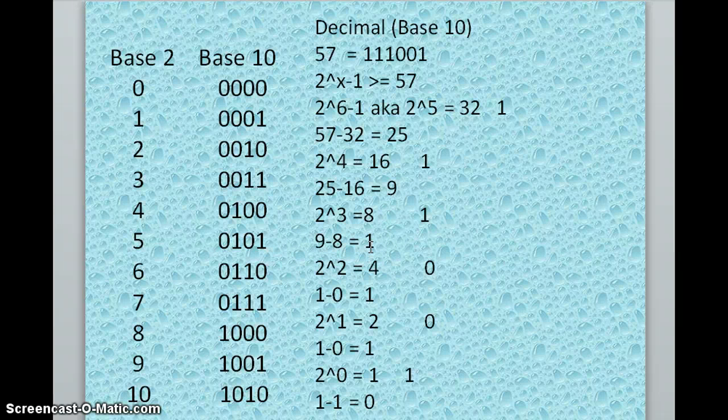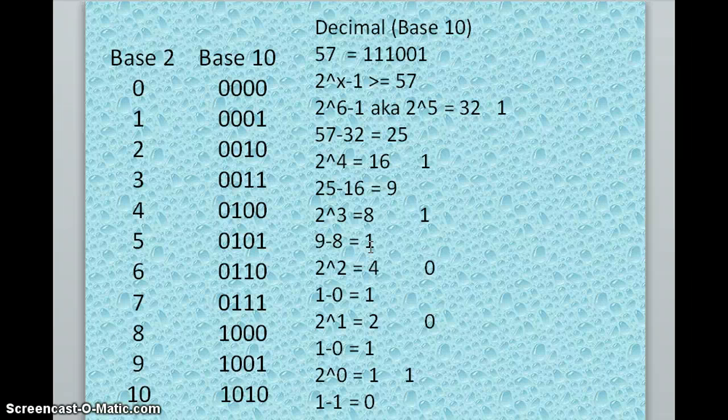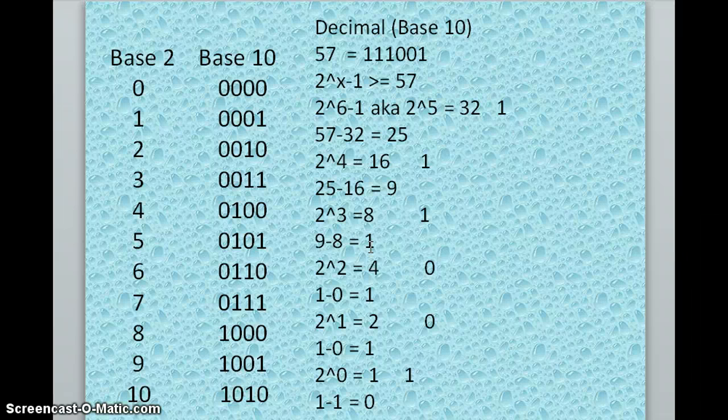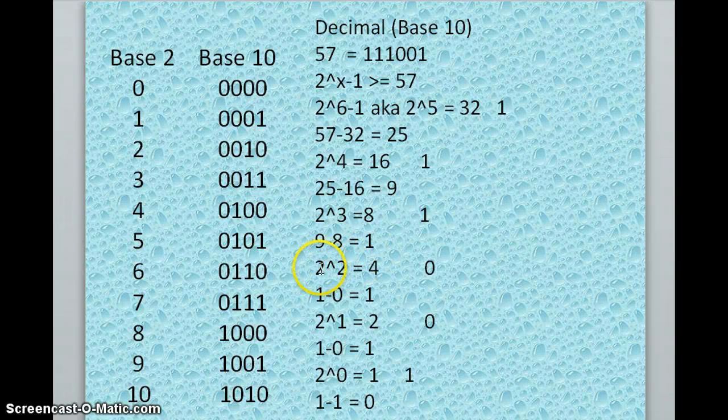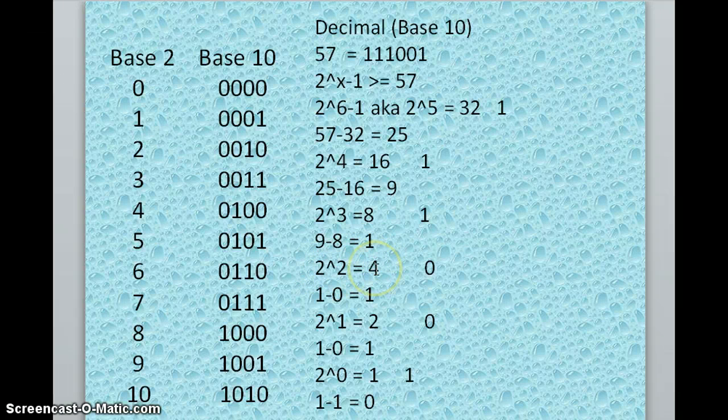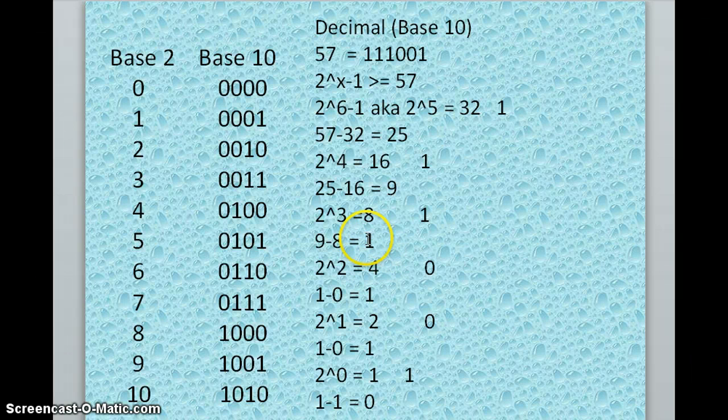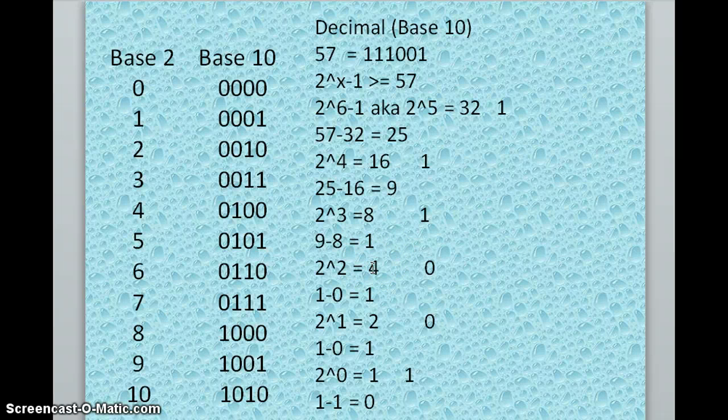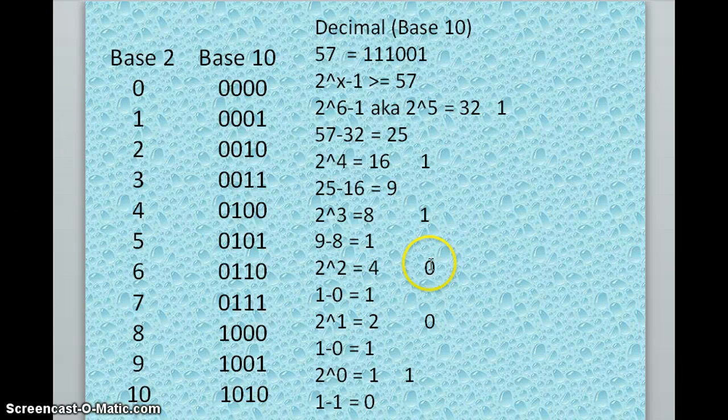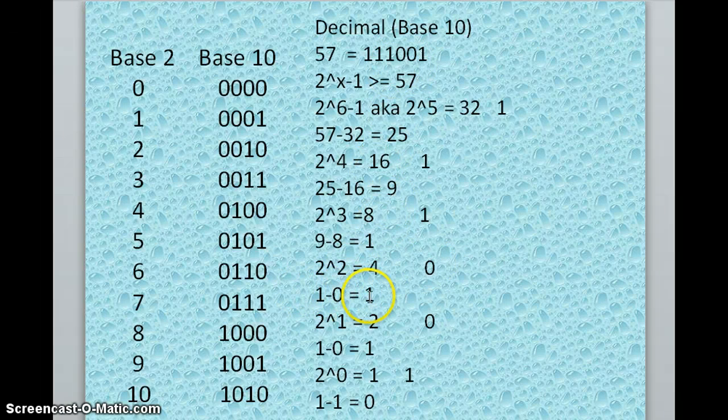And here is where we're going to stop using certain powers. So we're going to start seeing a couple zeros rather than ones. Here we have 2 to the 2nd power, which is 4. Now we'll look at the remainder, and we'll say, does 1 minus the power of 4, is that greater than or equal to 0? No, it is not. If the answer is no, we'll put a 0, and we will not subtract anything from the remainder because if we did, we would get a negative number.